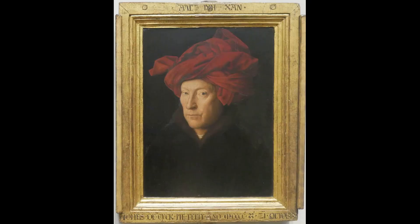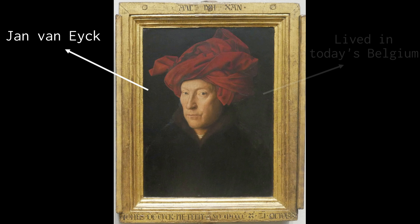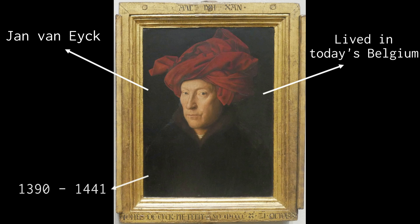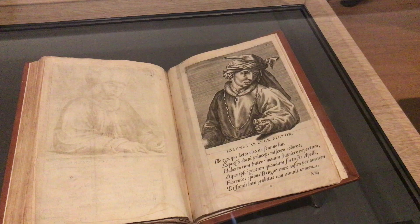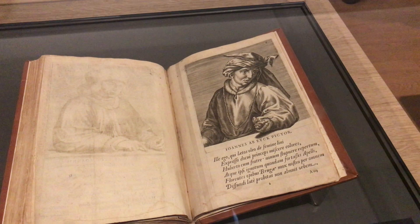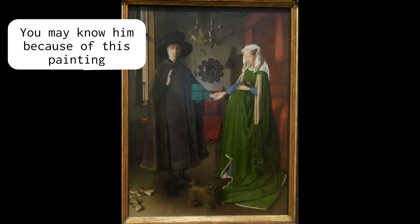Let me start first by telling you more about Jan van Eyck. He was born around 1390 and died in 1441. Although his life was rather short, it was filled with adventures and he left a huge mark on the art world. He revolutionized it so much that up until the 19th century, art historians thought he invented oil painting.